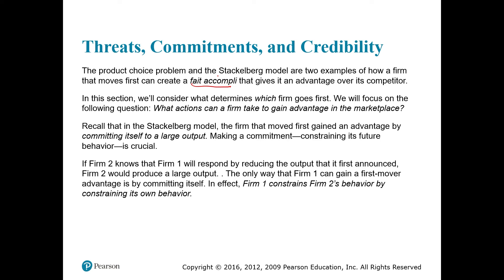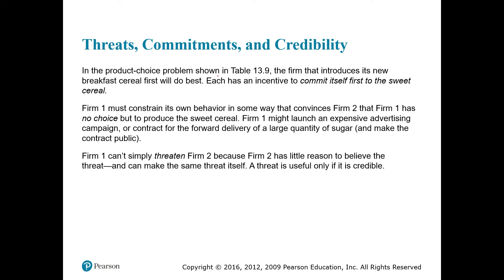We will consider what determines which firm goes first, and focus on what actions a firm can take to gain advantage in the marketplace. Recall that in the Stackelberg model, the firm that moves first gained an advantage by committing to a large output. If firm two knows that firm one will respond by reducing output, the only way firm one can gain a first mover advantage is by committing itself — constraining its own behavior.